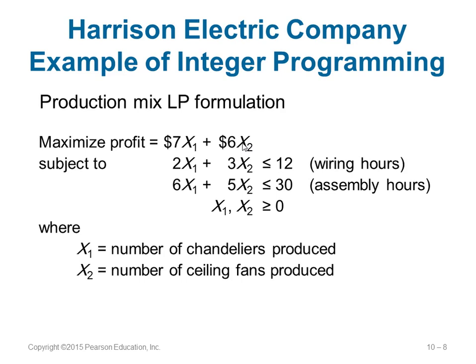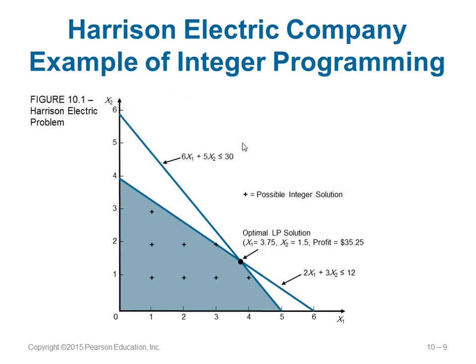Using a linear programming formulation, the objective is to maximize profit: 7x1 + 6x2, where x1 is the number of chandeliers and x2 the number of ceiling fans. Constraints: 2x1 + 3x2 ≤ 12 (wiring hours), 6x1 + 5x2 ≤ 30 (assembly hours), and x1, x2 ≥ 0 (non-negativity). Solving this gives an optimal solution of x1 = 3.75, x2 = 1.5, with a profit of $35.25.